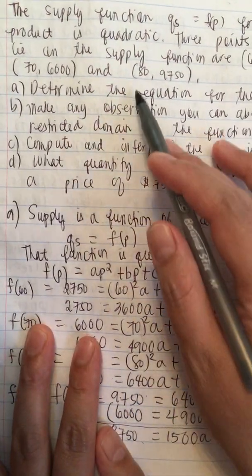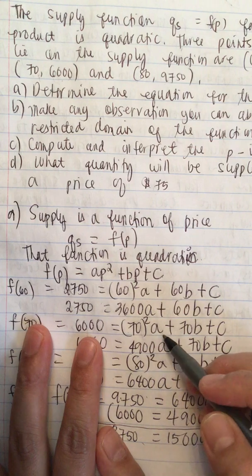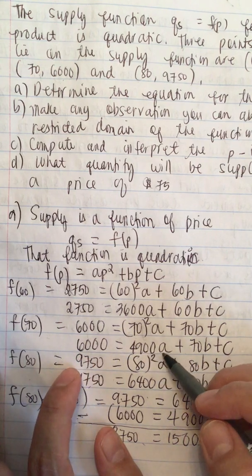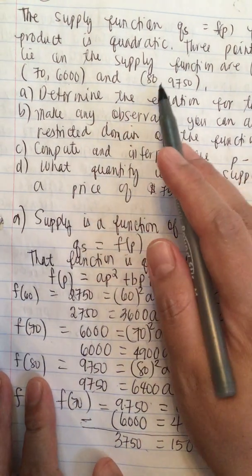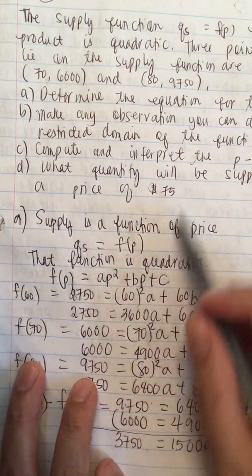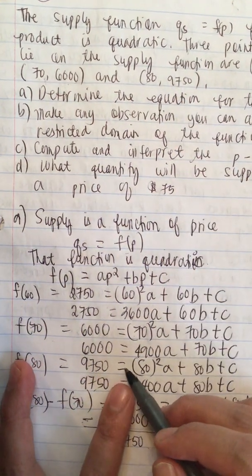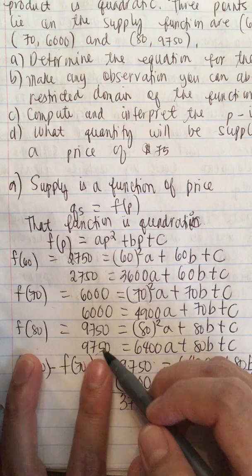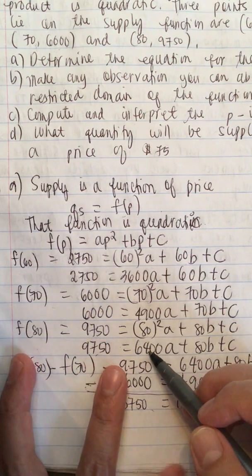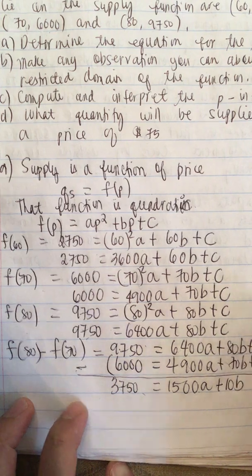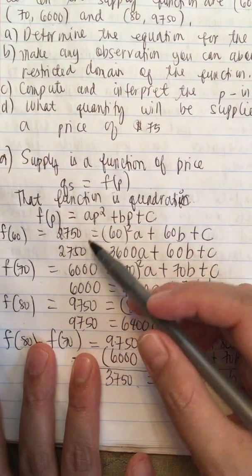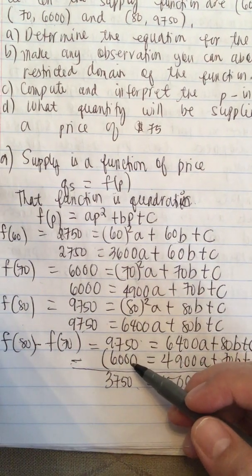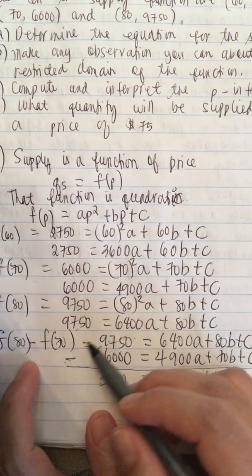The second point gives f of 70 equals 6000, so 4900a plus 70b plus c equals 6000. The last point gives f of 80 equals 9750, so 80 squared times a plus 80b plus c equals 9750, giving 6400a plus 80b plus c equals 9750. We have three points and three unknowns, so we solve these simultaneous equations.